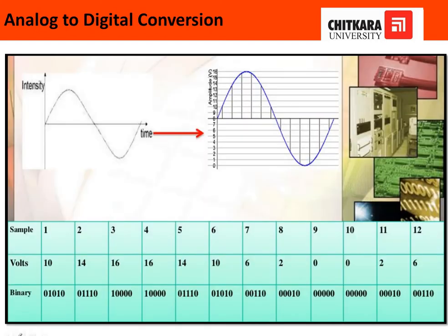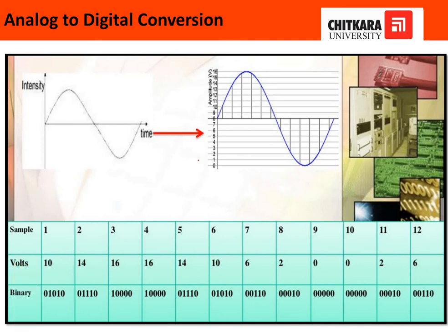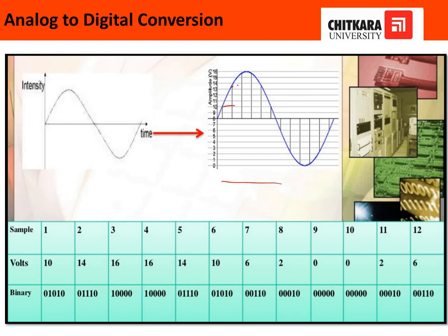This figure shows the overall process of sampling, quantization, and encoding. The summary of the whole process lies within this figure. It consists of the samples, the quantization levels, and lastly the encoding part. If you see, the output is in the form of 1s and 0s, which means we have converted the analog signal into a digital one.